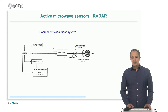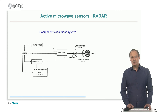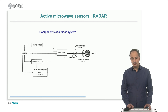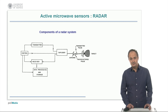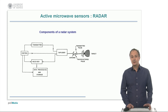A typical radar system is composed of a transmitter and receiver, a duplexer to switch the signal direction between transmit and receive, a control unit, and an antenna, which is used for both transmitting and receiving.